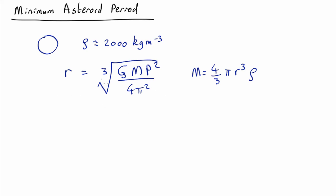So let's take this equation and cube both sides and we end up with r cubed equals g p squared over 4 pi squared times the mass which is 4 thirds pi r cubed rho. Interesting. Well the radius cancels out, it doesn't matter how big it is. One of the pi's cancels, the 4 cancels. So what we end up with is that 1 equals g period squared density over 3 pi.